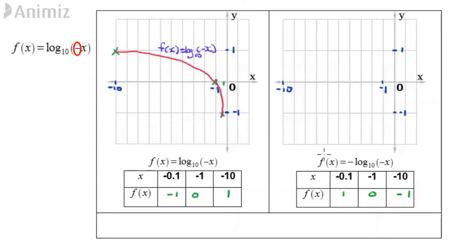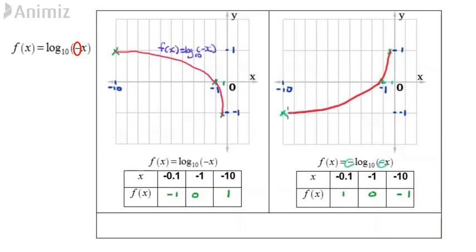Finally, sketch f(x) equals negative log base 10 of negative x. Plot all the points, starting from (-0.1, 1), (-1, 0), (-10, -1). The curve travels towards the third quadrant and goes to negative infinity. Label the graph as f(x) equals negative log base 10 of negative x.